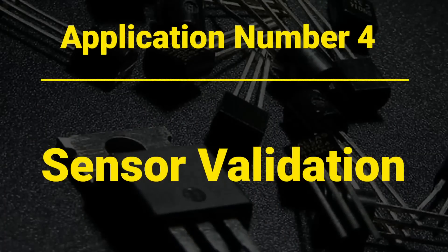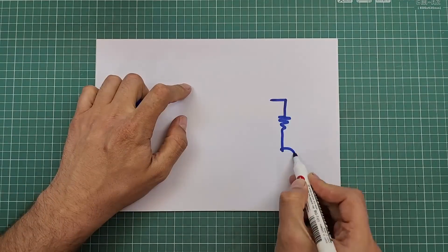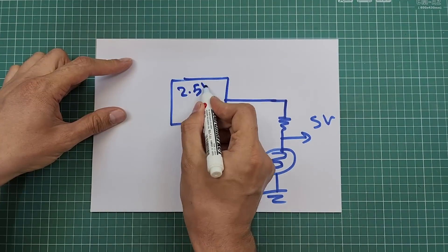So we have to use a steady voltage to power the circuit to ensure that the sensor value is independent of the source voltage. Application number four: sensor validation. By using a regulator to power up the circuit, we can ensure that the sensor value will not be affected by battery charge level, noise, or voltage fluctuations.